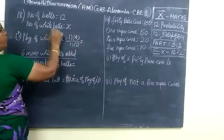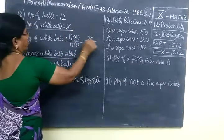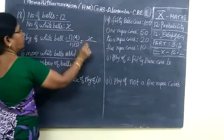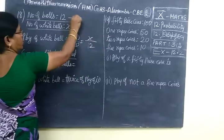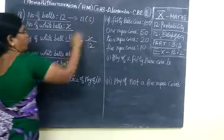So n of a, number of white balls equal to x, by total number 12, n of s. This is n of s, total number of balls.